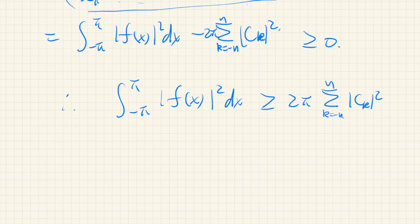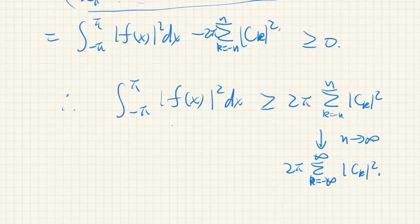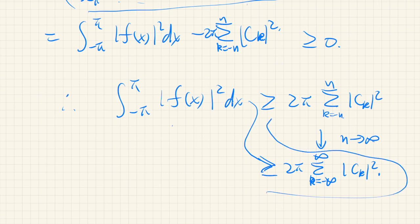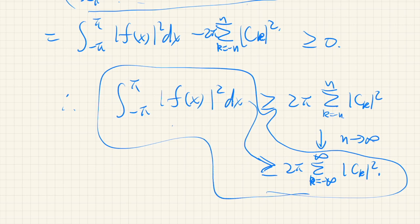The left-hand side doesn't depend on n, and the right-hand side is always positive. Taking the limit as n goes to infinity, we get 2π times the sum of |c_k|² from k = −∞ to +∞, and the inequality still holds. So this is greater than or equal to the integral, giving the desired result.